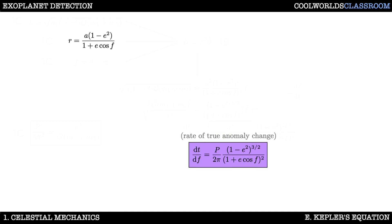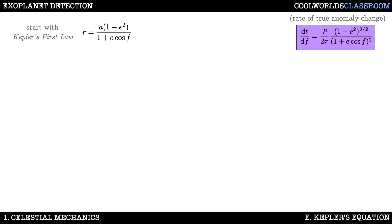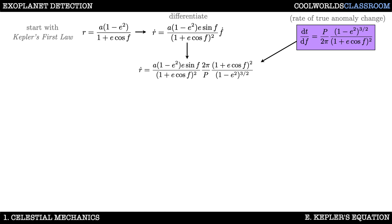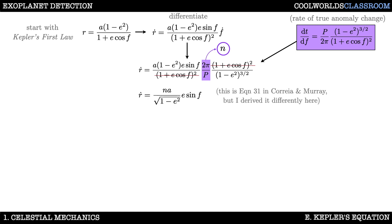Let's clear the slate and keep just two expressions: Kepler's first law and dt/df. Before we can obtain velocity v we're going to grab an intermediate result. First we differentiate r to get r-dot, and notice there's an f-dot term which we can replace with our result from the last slide. Looking at this, certain terms cancel out. We can also replace 2π/P with n, the mean motion, which represents the mean angular velocity. This gives us equation 31 in the Correia and Murray chapter.